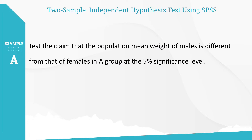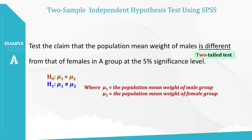Here is the first example. The keyword 'different' indicates this question involves a two-tailed test. These are the null and alternative hypothesis statements. Please identify each population mean to be clear. Next, let's perform a two-sample independent test using SPSS.